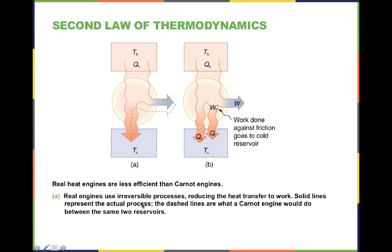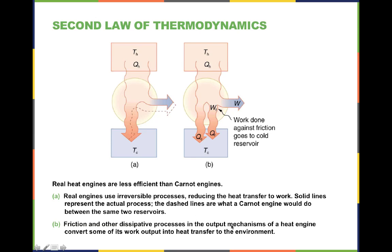There's a loss of work because the processes are irreversible — you lose more heat and get less work. Friction and other things that occur in the output of a heat engine convert some of the work into heat transfer into the environment. The heat loss to overcome friction, together with the loss from irreversibility, are the two things that account for the loss of efficiency between a Carnot engine and a real heat engine.